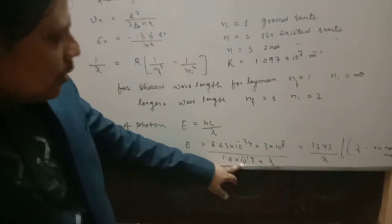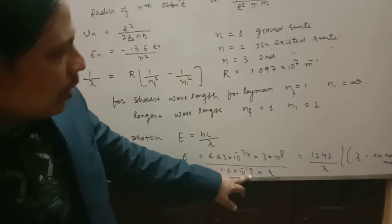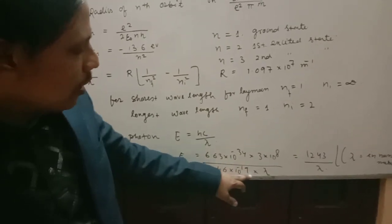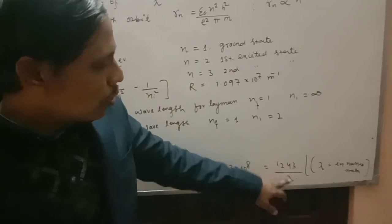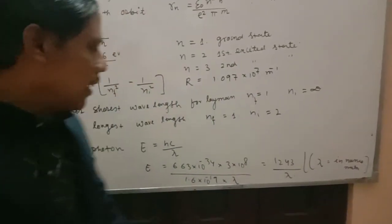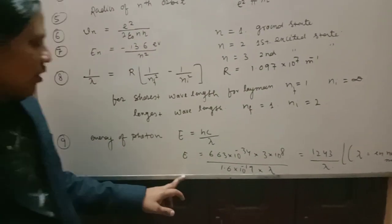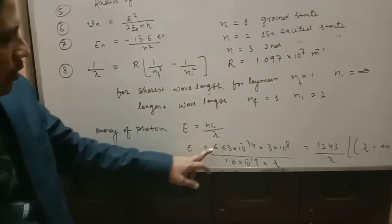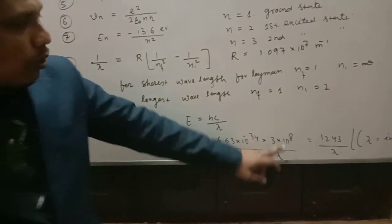If you convert to electron volts, it becomes 1243 by lambda. You have to take lambda in nanometers. And you will get the photon's energy in electron volts.